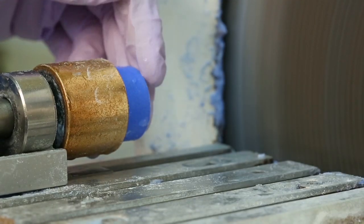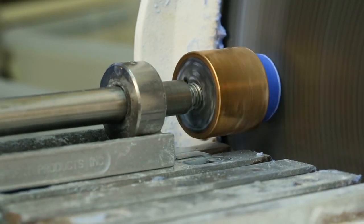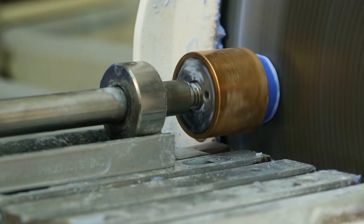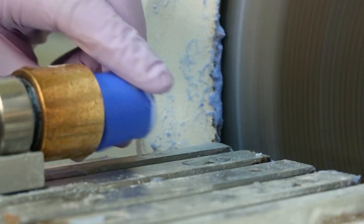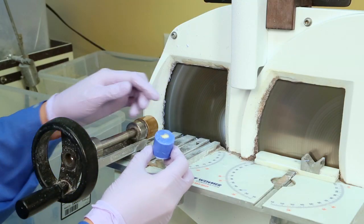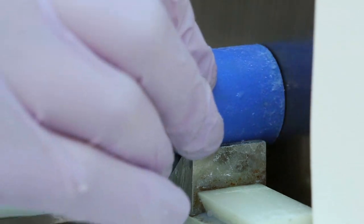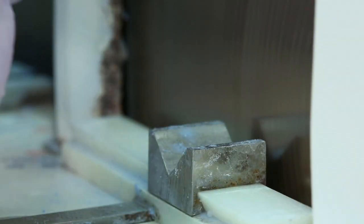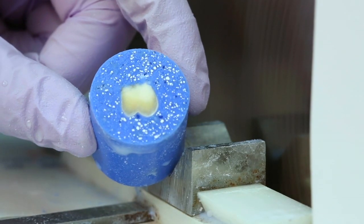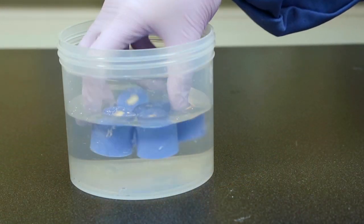Reverse the specimen and grind the opposite end parallel. Finish the tooth surface with a fine diamond wheel or 320 grit sandpaper. Return specimens to water until use.